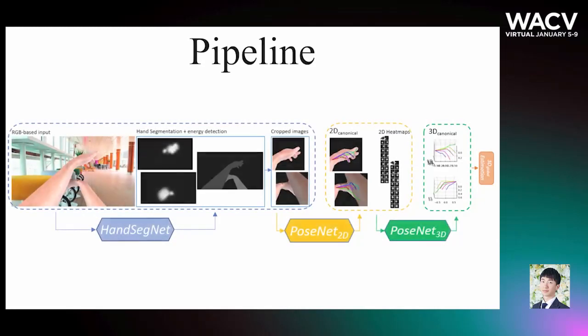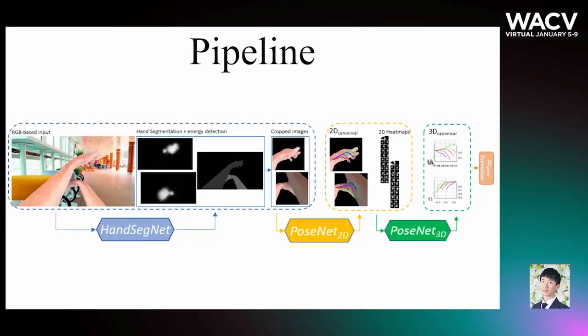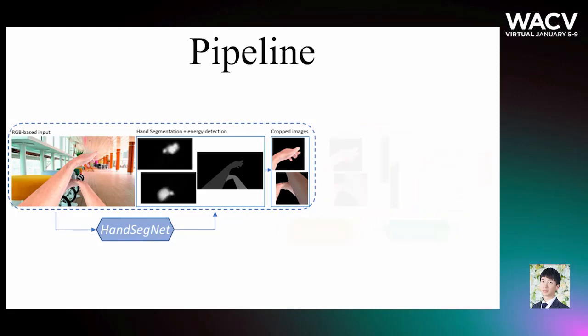Our pipeline consists of four major components: hand segmentation and detection, 2D hand pose estimation, 3D canonical hand pose estimation, and 3D global hand pose estimation. We created an algorithm we call HandSegNet that obtains the segmentation masks and heat map energy of both hands in a single image. The segmentation masks separate the color of the hands and arms from the background while the heat maps approximate the exact position of the hands.